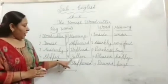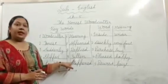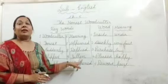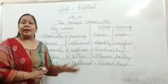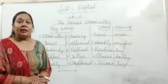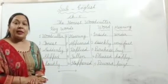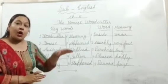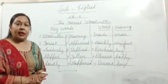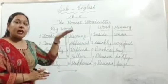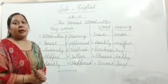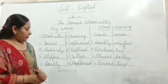Number nine: F-A-L-L-E-N — Fallen. Fallen means dropped — gir jana. Kisi cheez ka upar se niche gir jana. Dropped.